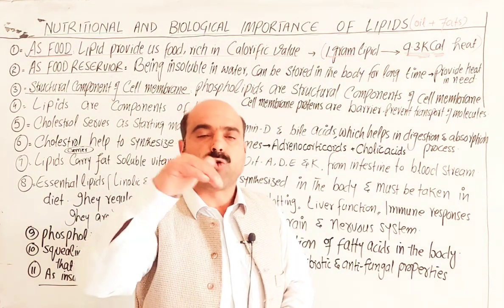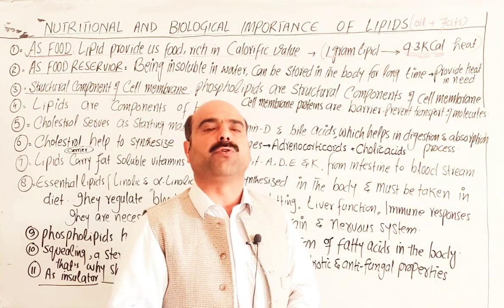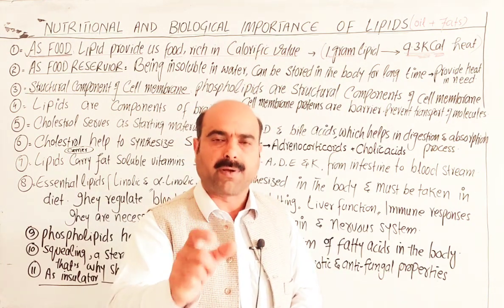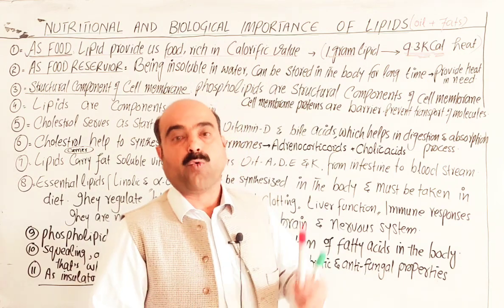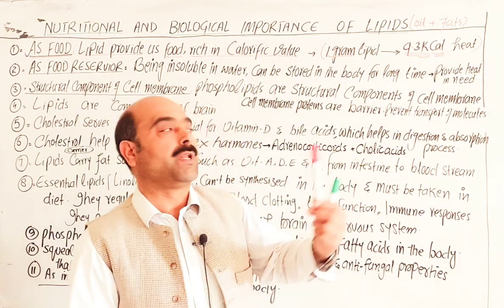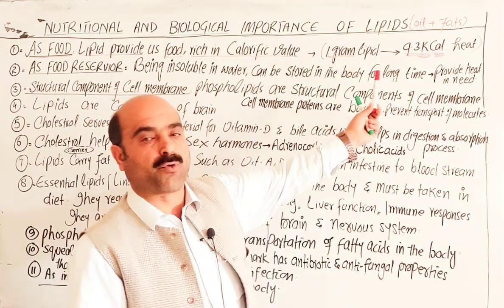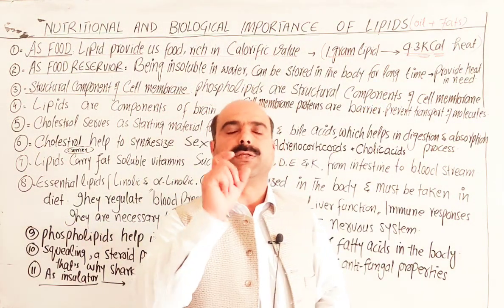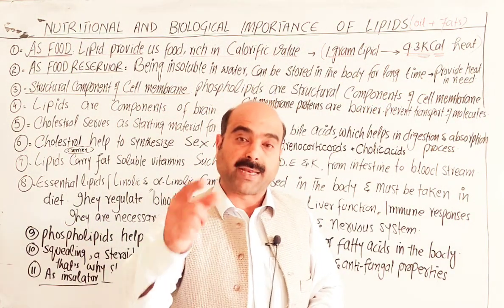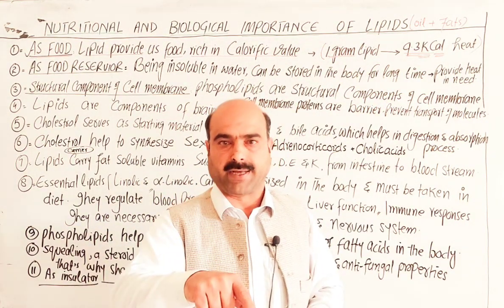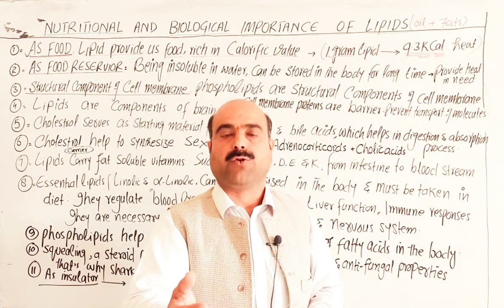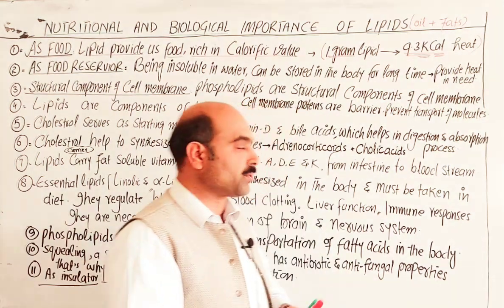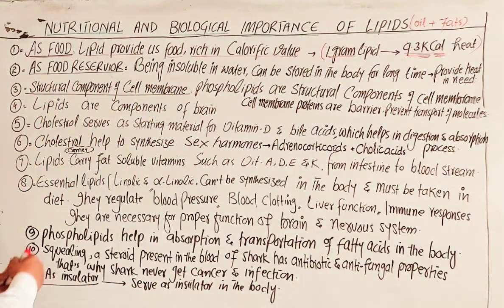When one gram of lipid is oxidized, it provides 9.3 kilocalories of heat energy — that is twice the energy compared to one gram of protein and one gram of carbohydrates. One gram of protein and one gram of carbohydrates provide only 4 kilocalories of heat energy, while lipids provide 9.3. So lipids are both an energy source and a food source.